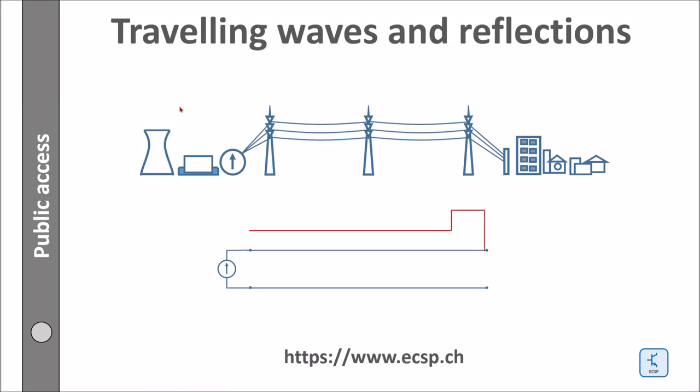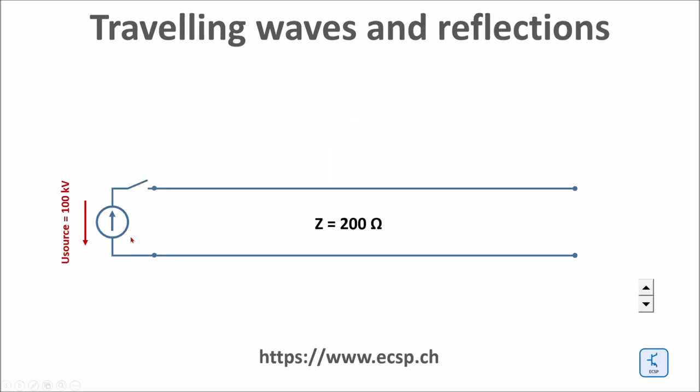Hello everybody! Today I would like to talk about traveling waves on transmission lines and reflections. Here I have a voltage source, I have a switch and I have a line a few kilometers. After closing the switch I get a voltage wave traveling back and forth between the line heads at speed of light.